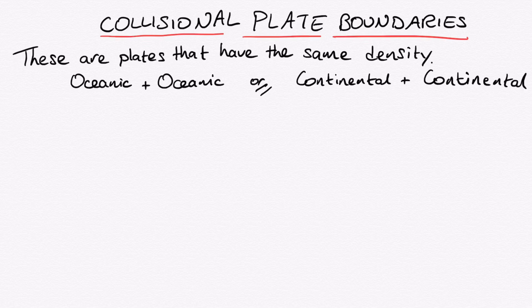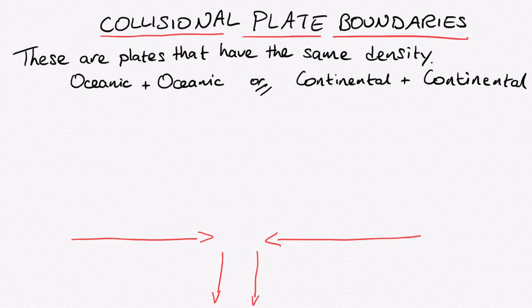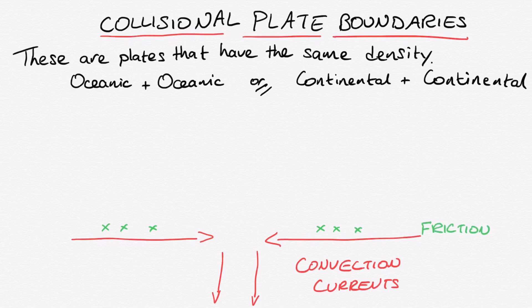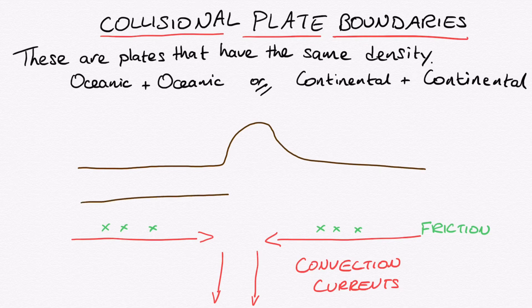What happens is that the convection currents move towards each other, and this is why it's called a convergent plate boundary. As they move towards each other they generate friction between the convection currents and the earth's crust, and this friction drags the plates towards each other.